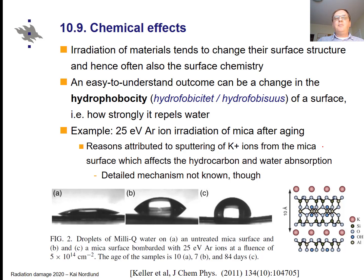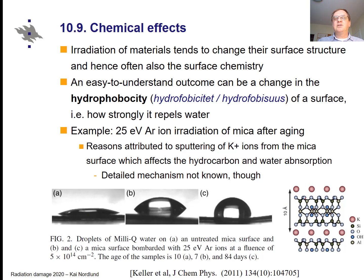Chemical effects can also be modified. One typical example is changing the surface chemistry, because low-energy radiation changes the surface structure. A classical example is changing the hydrophobicity — how strongly a material repels water. This is a series of images of a water droplet on a mica surface: one unirradiated, one irradiated with 25 eV argon ions, and then the same sample after aging. After irradiation you get very high hydrophobicity, and even after 84 days it is clearly more hydrophobic than before irradiation. This relates to how the surface layer structure changes and how that affects water adhesion.